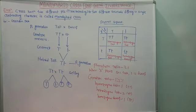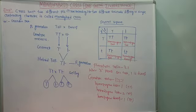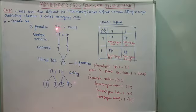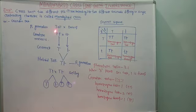He selected a true breeding variety of a tall plant and crossed it with a true breeding variety of a dwarf plant. To obtain pure tall and pure dwarf varieties, he carried out selfing — the tall plant was selfed for about 6 to 7 generations to get the pure true breeding plant. Then the true breeding tall plant was crossed with the true breeding dwarf plant.